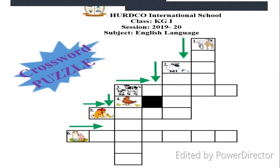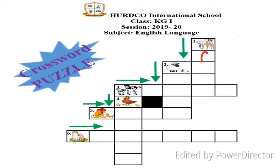Now we will try to solve the puzzle. Picture number one is a horse, and the name of the horse's baby is foal. So here we will write foal downward: F-O-A-L.